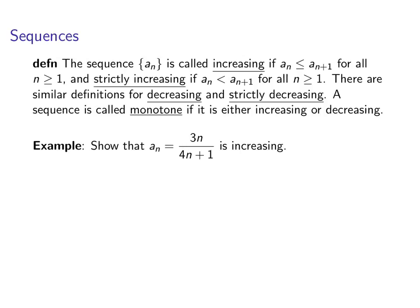We'll also call a sequence monotone if it's one or the other, if it's either increasing or decreasing. So monotone is just the word for a sequence that's always going up or always going down.